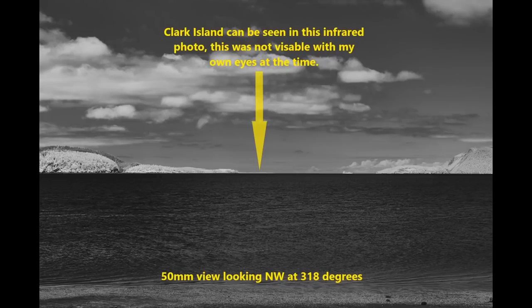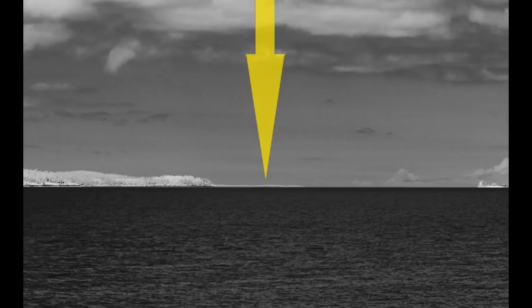This is an infrared shot looking northwest at approximately 318 degrees towards Clark Island using a 50 millimeter lens, which is very similar to what the human eye sees. I could not see the island at the time I took the photo, but zooming in on the photo you should be able to see the slight whitish outline going across the horizon — that's Clark Island.